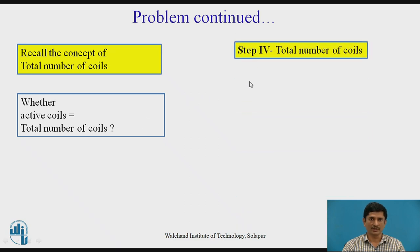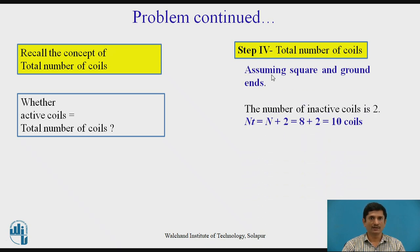Now, the total number of coils. How to proceed with total number of coils? We know that if the assumption is squared and ground end of the spring, number of inactive coils are 2 for such kind of a spring. Hence, to get total number of turns, I need to add these 2 turns in the active turns. Active turns are 8. If I add 2 to it, I will get 10 as total number of coils. Remember, this total number of coils includes active and inactive number of coils.